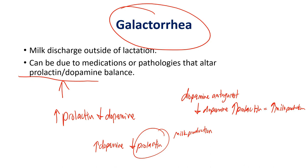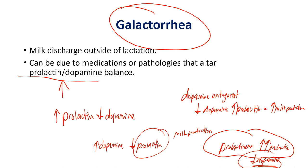Another situation causing galactorrhea is a prolactinoma. This one doesn't need to go through any alteration of dopamine — the tumor at the area of the brain produces uncontrolled prolactin levels. Dopamine levels would go down in response, but that wouldn't matter because it started from the uncontrolled prolactin-producing tumor. With this increased prolactin you have tons of milk production that can't be stopped through negative feedback, resulting in increased milk production and galactorrhea.